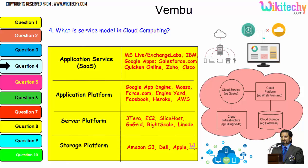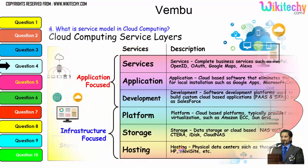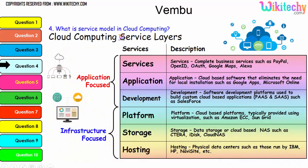Digging further into the service model, typical examples are: application service, application platform, server platform, and storage platform — the latter provided by Amazon S3, Dell, and Apple. The important service layers are: services, application, development platform, storage, and hosting. These are also examples commonly asked in cloud computing interviews.